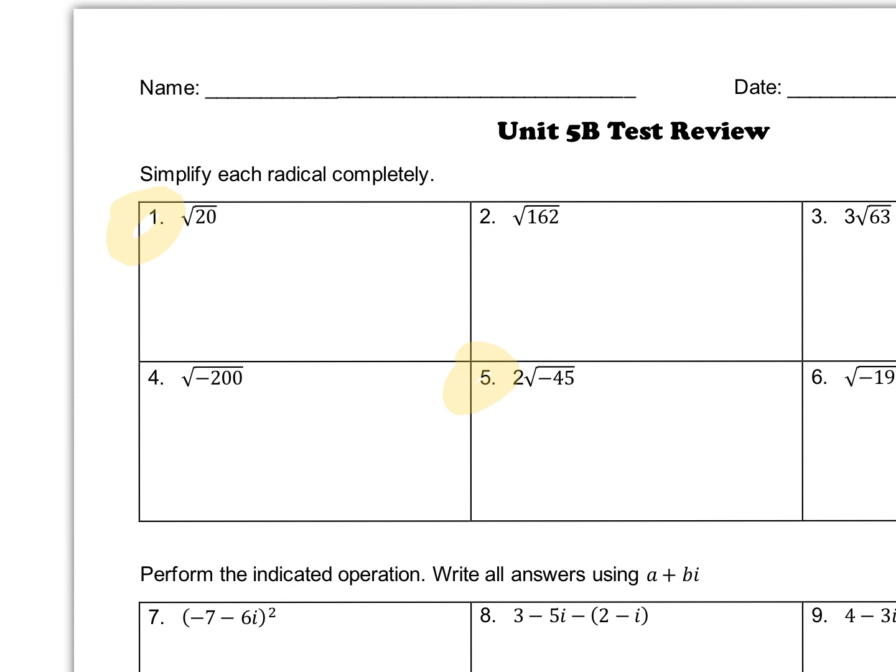Well, if we think about 20, one way we can work this out is we can just do the factors. We can do 4 times 5, and then 4 is a perfect square because it's 2 times 2. When we have a pair like that, we just bring that pair out as a single on the outside of the radical, and then what stays would be what's left, which is a 5. So our answer would be 2 square root 5.